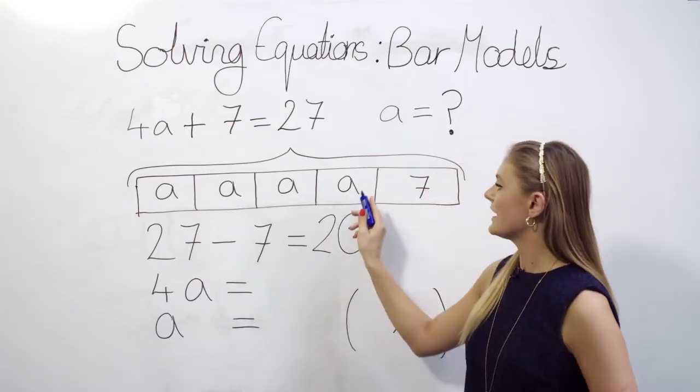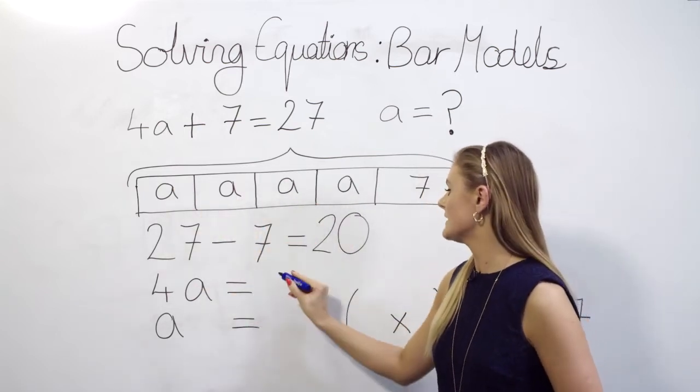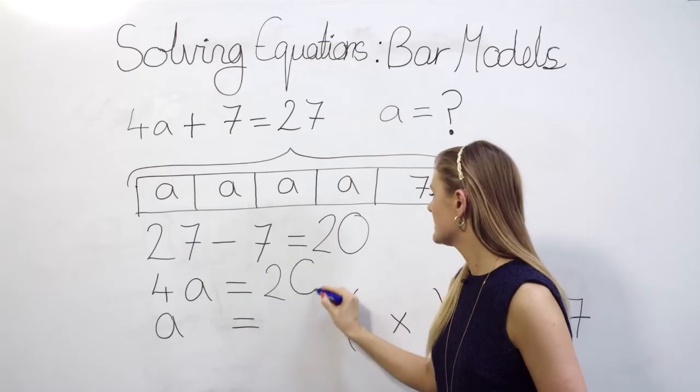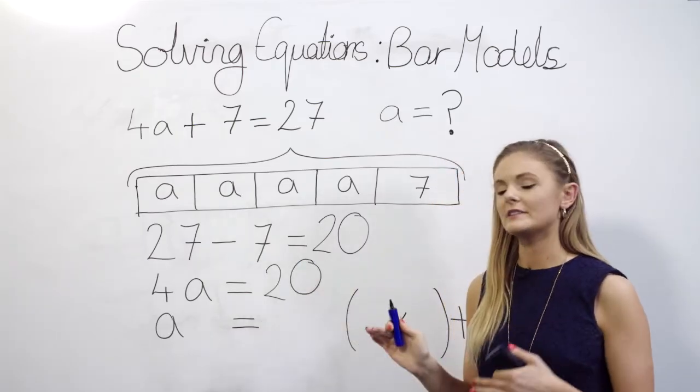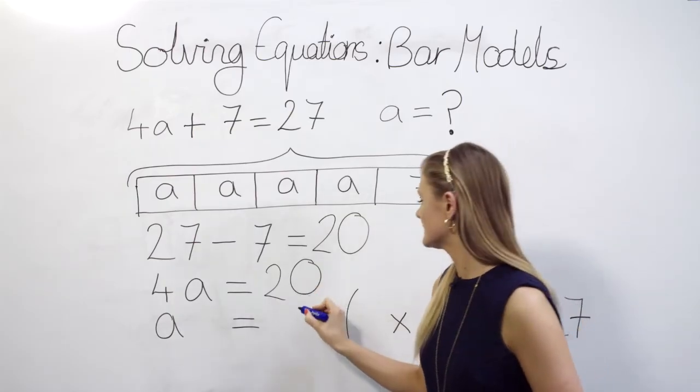Now this gives us the value of these four parts all together. So 4a equals 20. But we want to figure out the value of a on its own so I simply need to divide 20 by 4 which gives us 5.